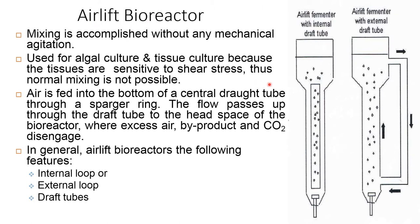The second type of vertical column photobioreactor is the airlift bioreactor. Here the mixing is accomplished without any mechanical agitation. It is used for algal culture and tissue culture because the tissues are sensitive to shear stress, so normal mixing is not possible. In general, air is fed to the bottom of the central draft tube through the sparger ring. The flow powers up through the draft tube to the headspace of the bioreactor where excess air, byproducts, and carbon dioxide disengage. The airlift bioreactor consists of the internal loop, the external loop, and draft tubes.